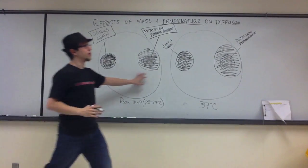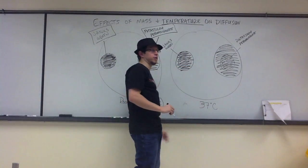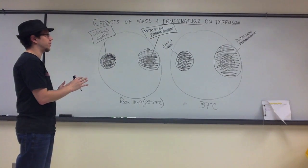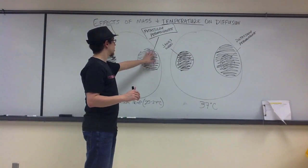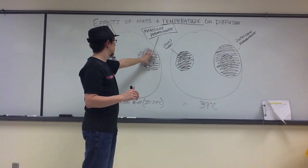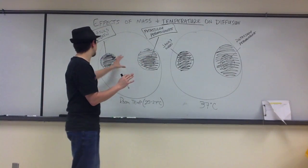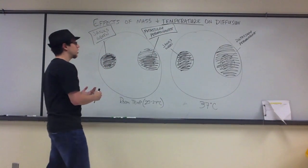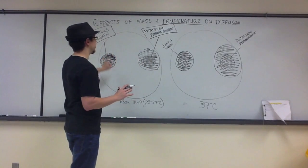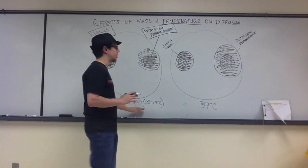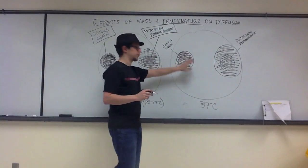Both plates were made at the same time and filled with dye at the same time. One was placed at room temperature and one at 37 degrees Celsius. After the 30-minute incubation period, we could compare the halo of potassium permanganate to the halo of Janus Green to see how fast potassium permanganate diffused compared to Janus Green. To assess the temperature effect, we compared potassium permanganate on the room temperature plate to potassium permanganate on the 37-degree plate, and likewise for Janus Green.